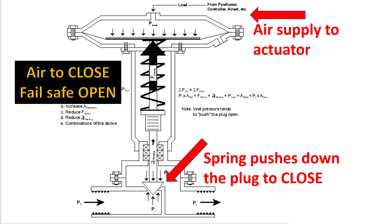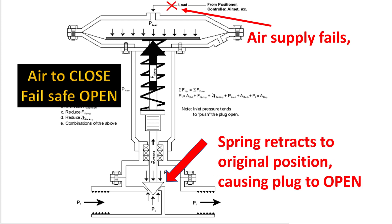When air supply is supplied to the top of the actuator, it pushes down the diaphragm, and the spring in turn pushes the plug to the closed condition — this is normal operation of the actuator. Now if the air supply fails or gets interrupted, the actuator should go to failsafe mode, meaning the valve should open during a failsafe condition.